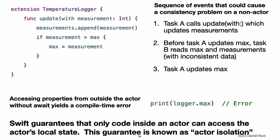If you try to access those properties from outside the actor like you would with an instance of a class, you will get a compile-time error. Accessing logger.max without writing await fails because the properties of an actor are part of that actor's isolated local state. Swift guarantees that only code inside an actor can access the actor's local state. This guarantee is known as actor isolation.